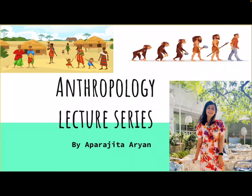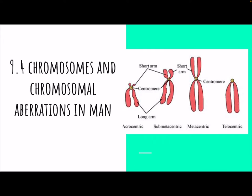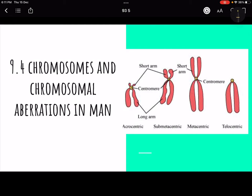Hi guys, welcome to the next lecture in our anthropology series. We had started topic 9.4 and seen an overview of chromosomes and chromosomal aberrations in man. We have already studied how aberrations or genetic mutations in chromosomes occur — whether in the number or structural aspect — and what the different types of chromosomal mutations are called.